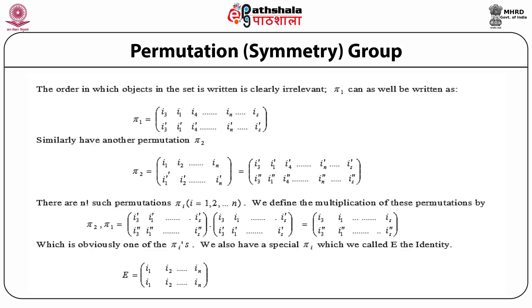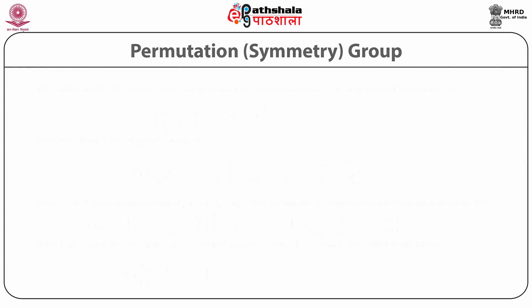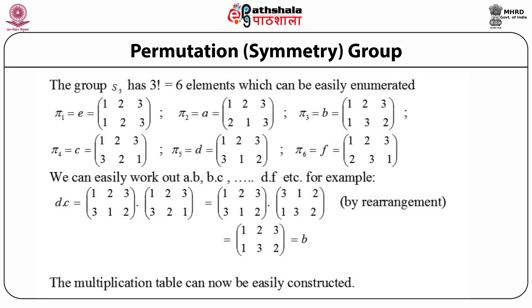As a special case we have the identity permutation, in which each object is permuted to itself: i₁ → i₁, i₂ → i₂, ..., iₙ → iₙ, without any change. To illustrate permutation symmetry, let us consider the group S₃, which by our definition has 3! = 6 elements. The group can be easily enumerated by defining permutations π₁ through π₆.